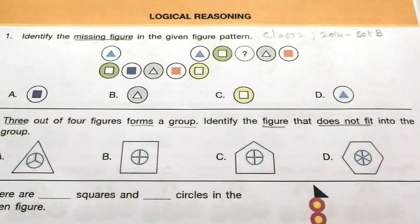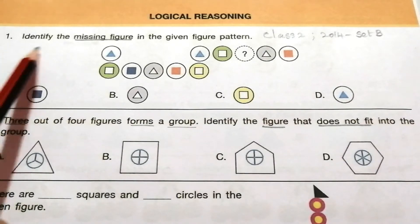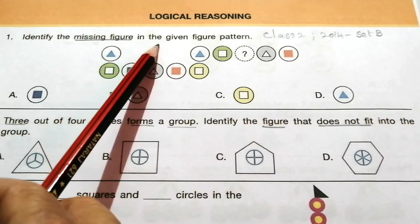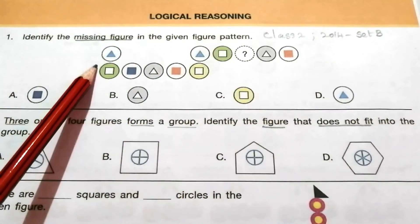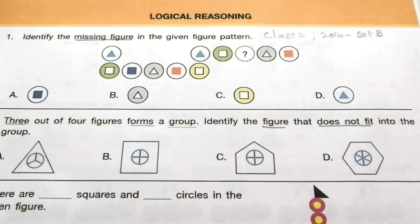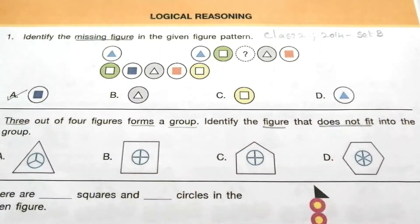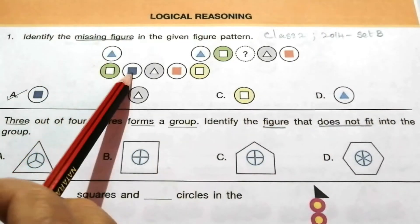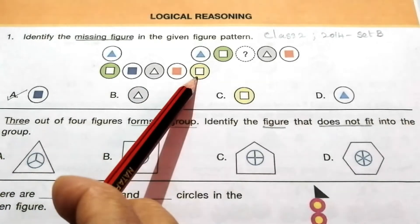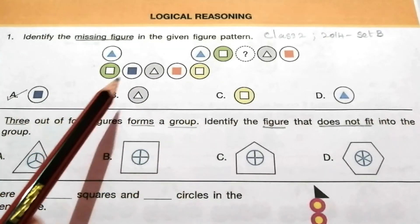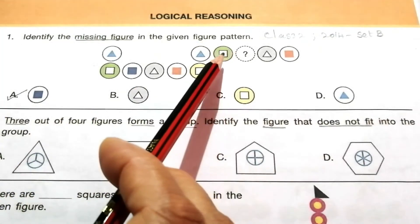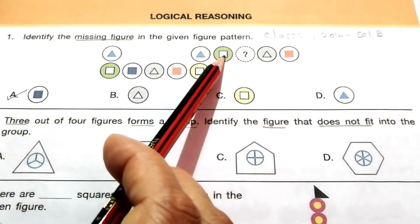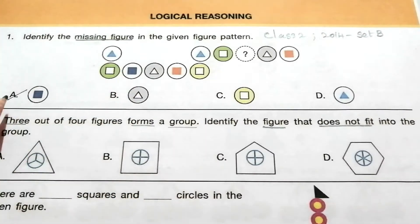The first topic is Logical Reasoning. Question 1: Identify the missing figure in the given figure pattern. Look at the given figure pattern and try to find out the answer. The answer is A. Here, figures 1, 2, 3, 4, 5 form one pattern; this pattern is repeated, so the figure after this is this one. The answer is A.